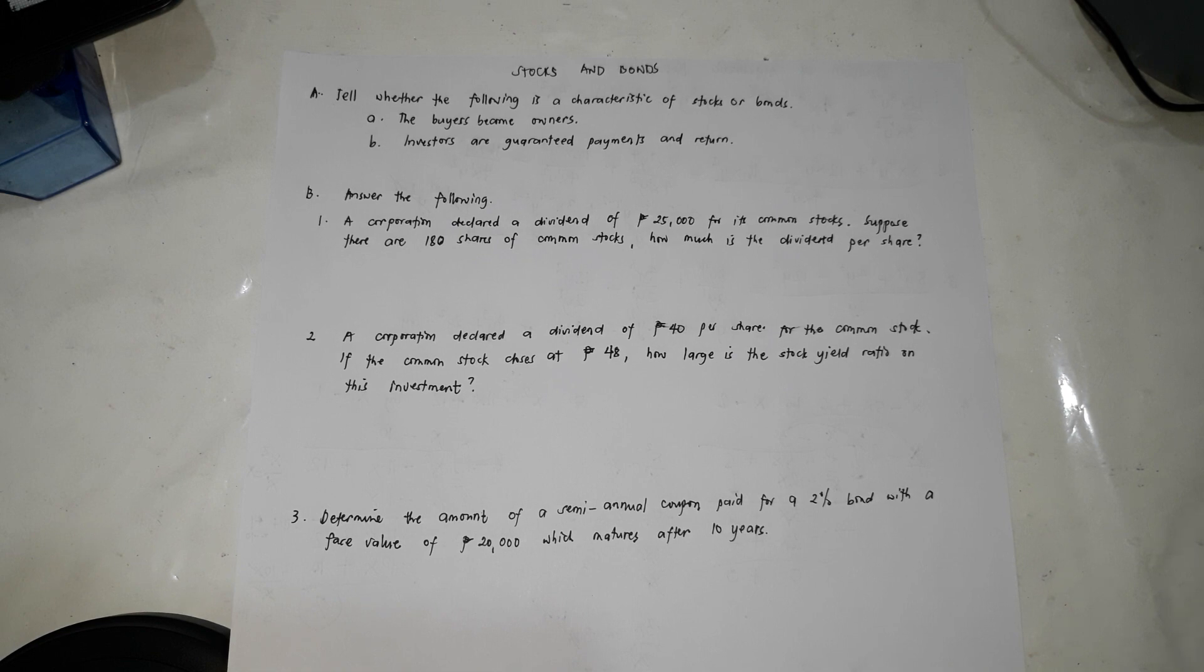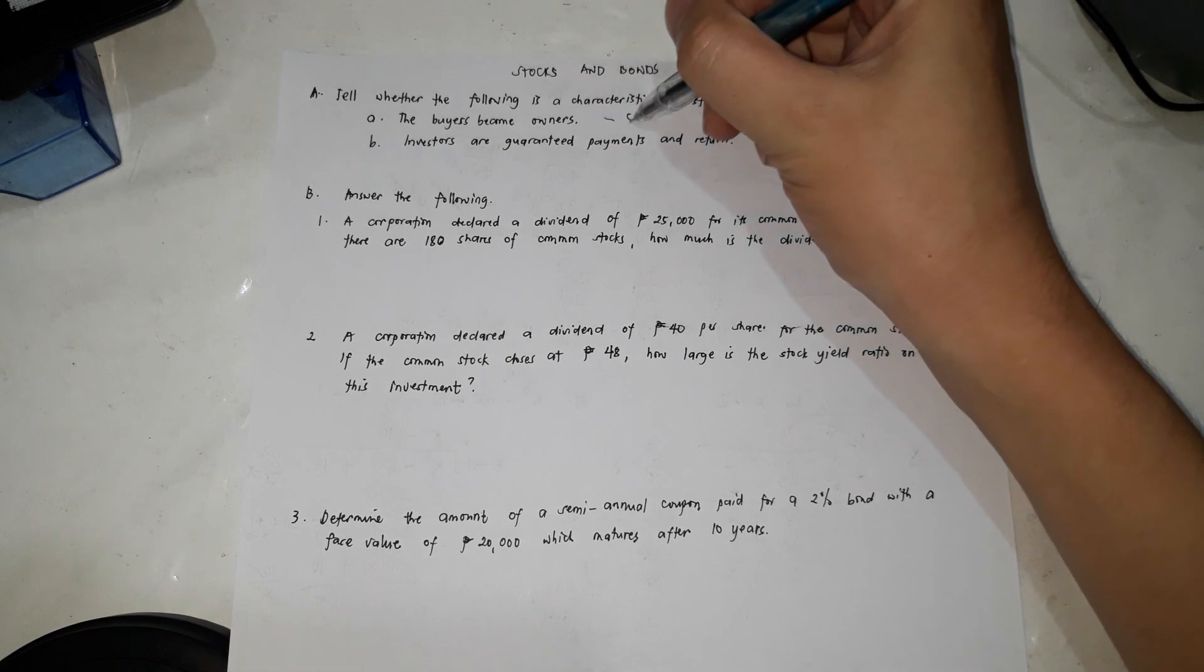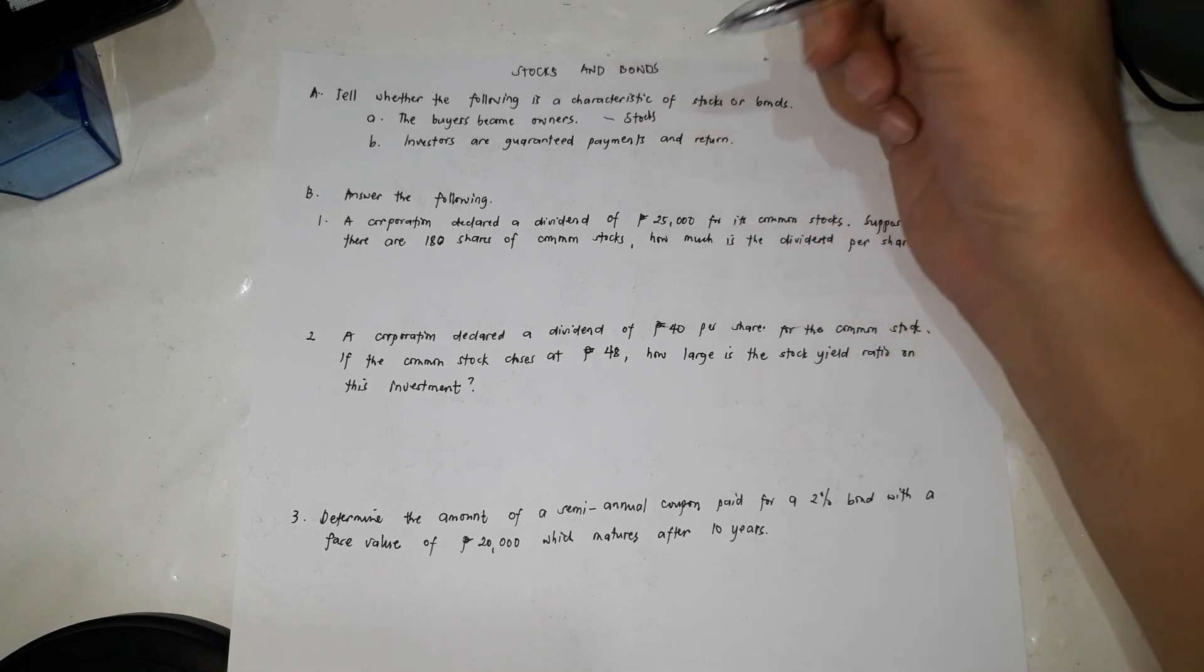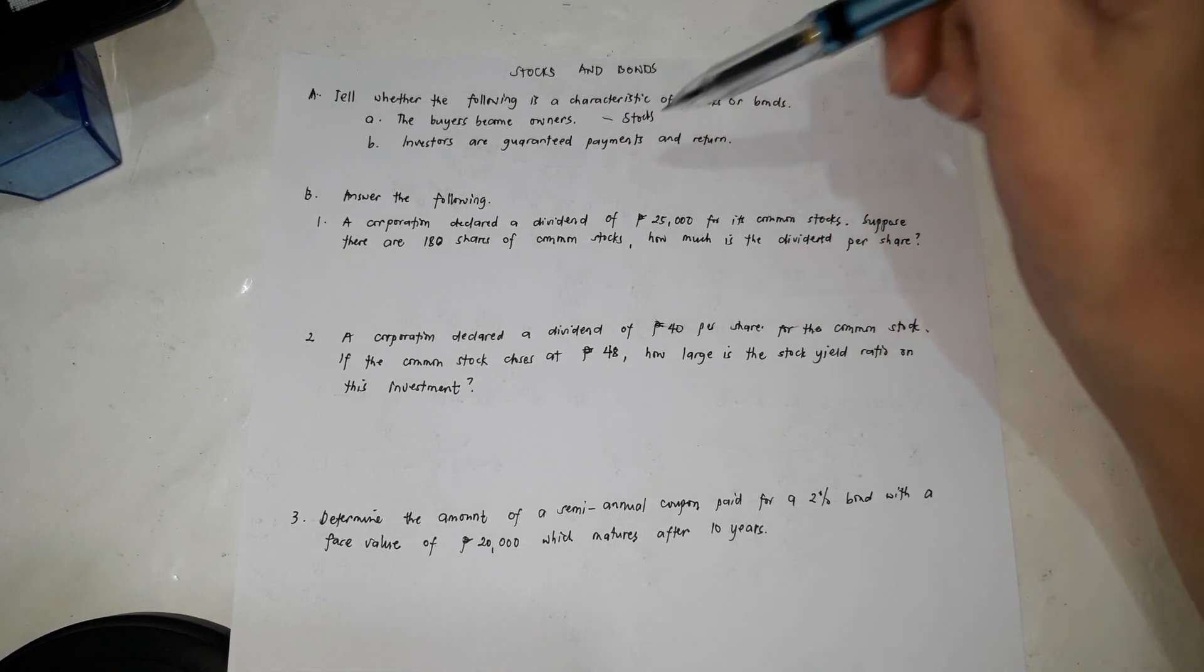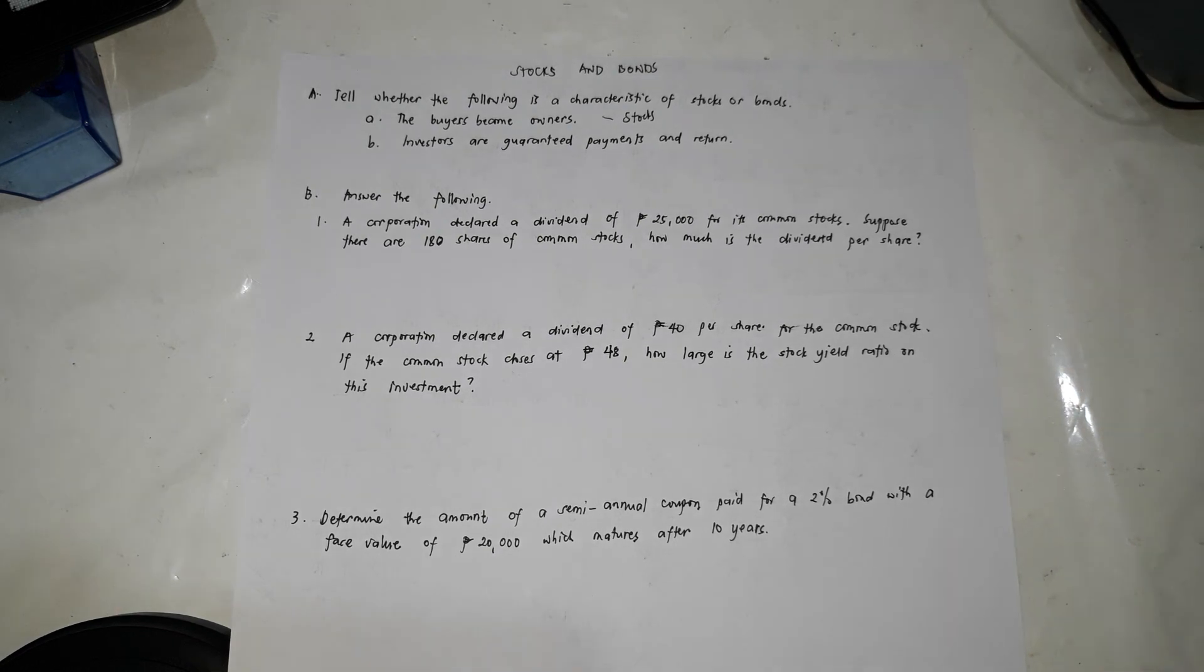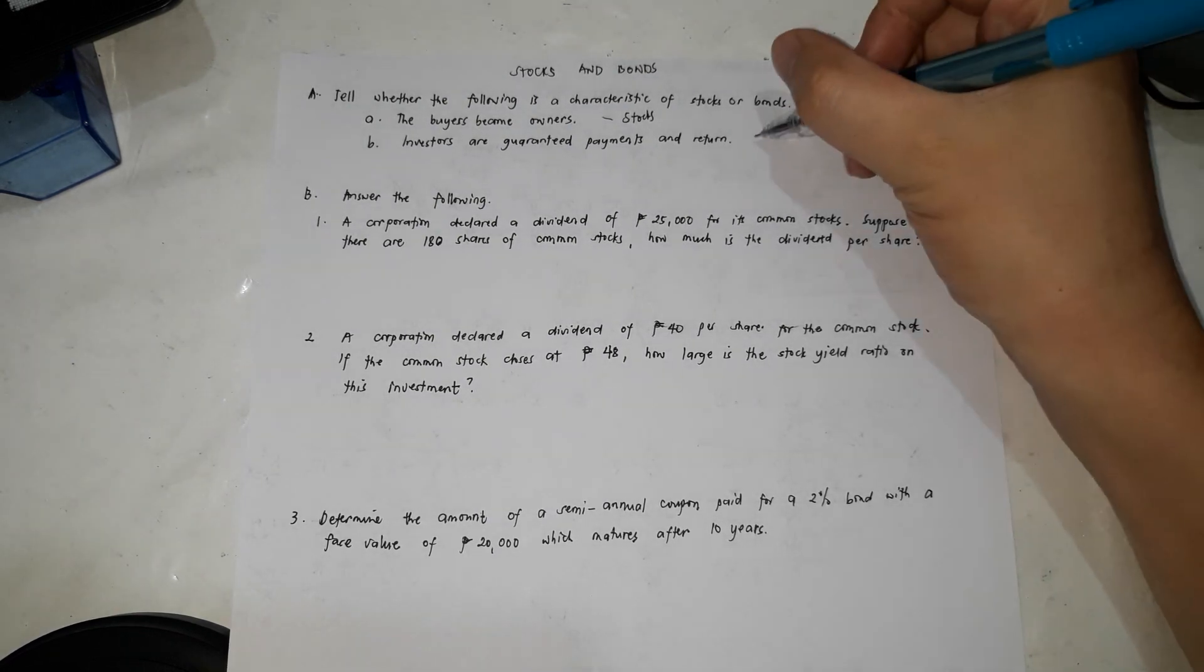So now we're going to learn about stocks and bonds. First is we're going to tell about if the characteristic is a characteristic of a stock or a bond. Letter A, the buyers become owners. So is it referring to stocks or bonds? So of course it refers to stocks. But if the investors are guaranteed payments and returns, that is for bonds.